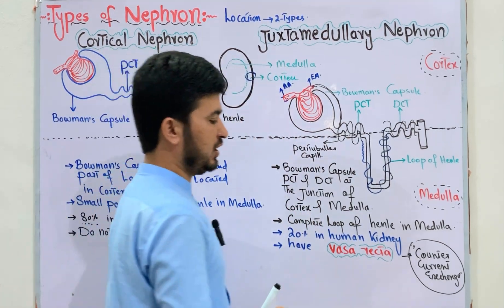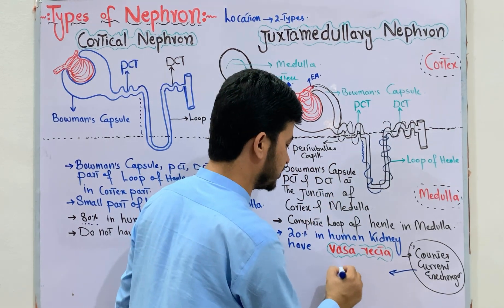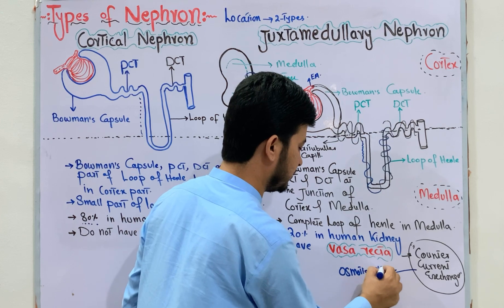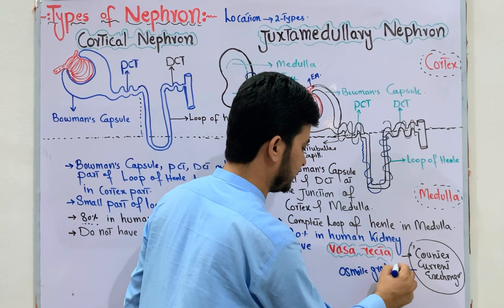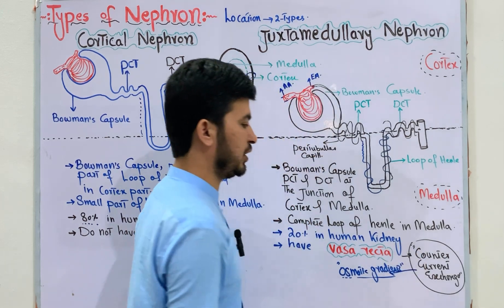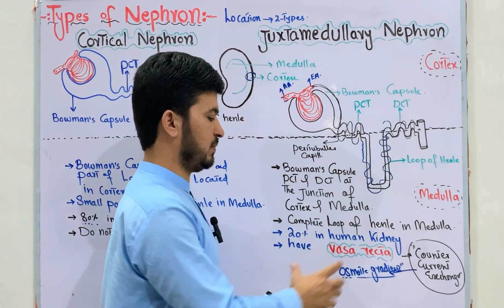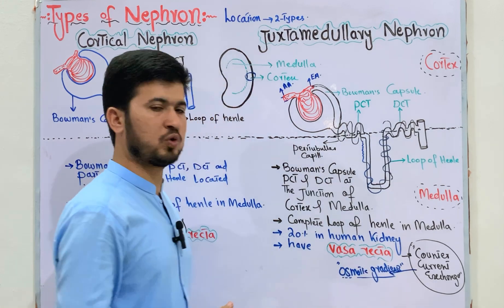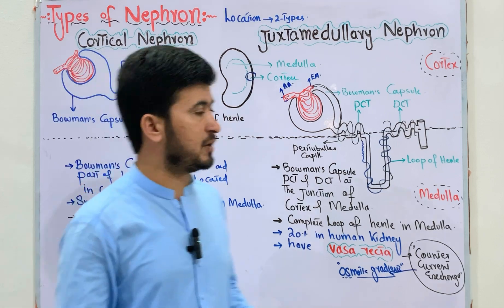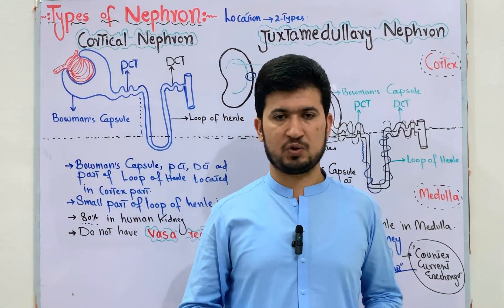This counter-current exchange mechanism and the details of this process will be discussed in the next video. The vasa recta helps the kidney maintain the osmotic gradient. Thank you so much for watching this explanation of the juxtamedullary nephron.